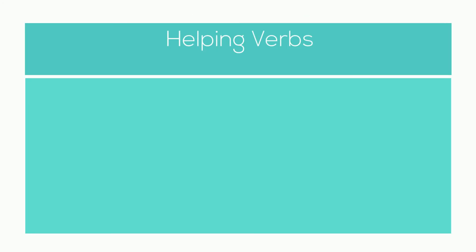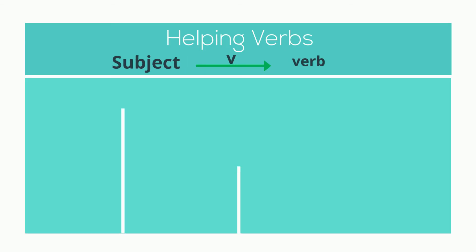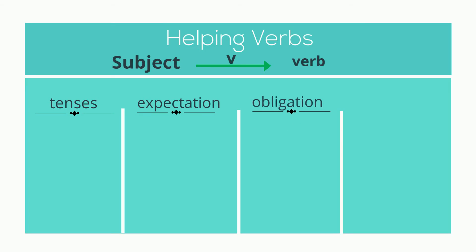Helping verbs, on the other hand, come before the main verb — and that's why they're called helping verbs. They help the main verb show the tenses of a sentence. They also add meaning related to expectation, obligation, and possibility.